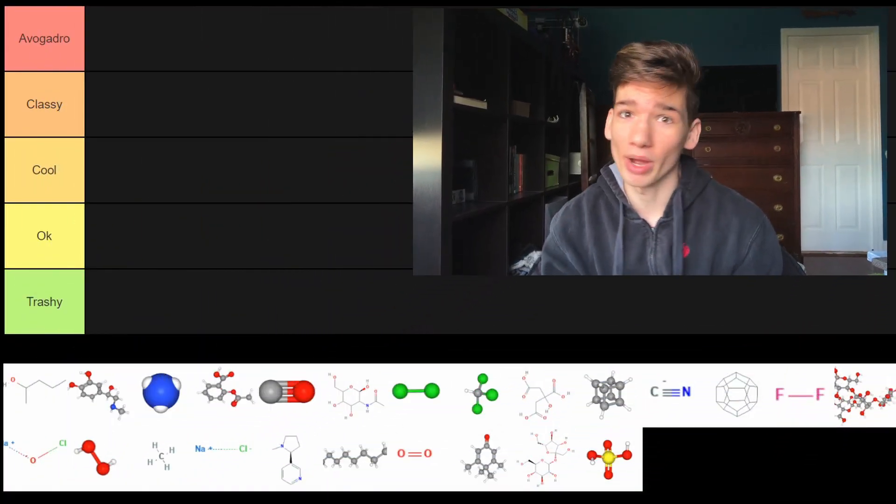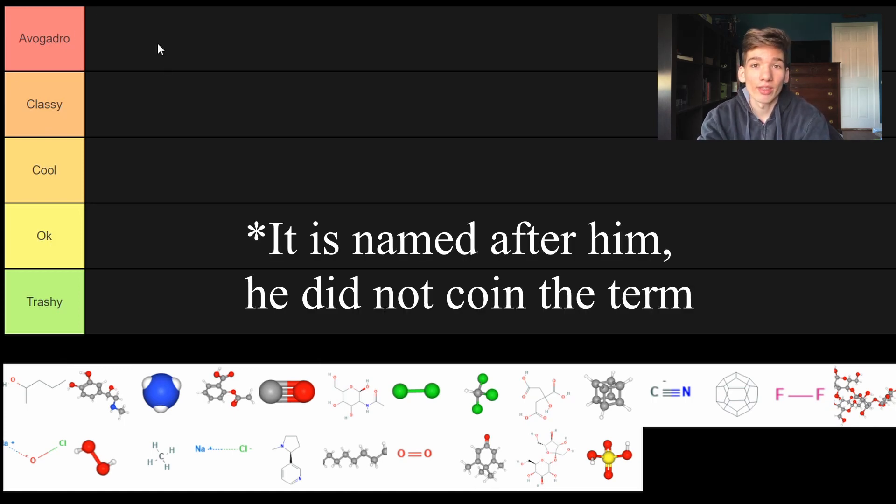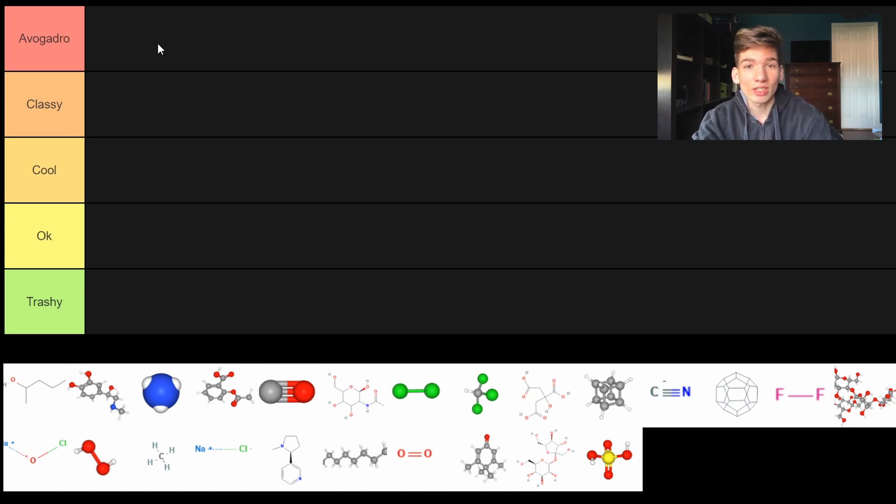So here we have our bunch of chemicals at the bottom and our five ranks: Avogadro, classy, cool, okay, and trashy. Avogadro is a scientist that came up with the term the mole, which is 6.022 times 10 to the 23rd of something.